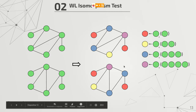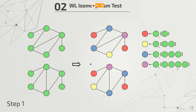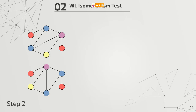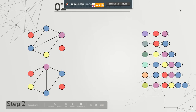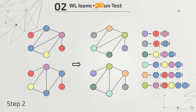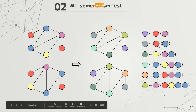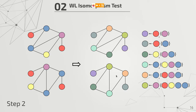After each step — because it is an iterative process — we check whether the distribution of colors of the two graphs is the same. If they are the same, we continue refining the colors until the color distributions differ, or until a certain number of steps is reached. These two graphs are actually isomorphic, meaning they have the very same structure according to this test.